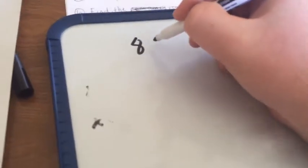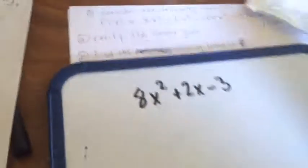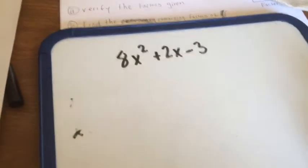8x squared plus 2x minus 3. This is a simple one. This isn't as simple as some of the factors. I use the AC over B method, which is A times C over B.